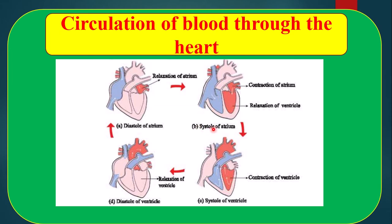Picture number B — Systole of atrium. After both atria fill up, they start to contract. At that time, tricuspid valve and bicuspid valve will open. So, carbon dioxide-rich blood enters into the right ventricle and oxygenated blood enters into the left ventricle.